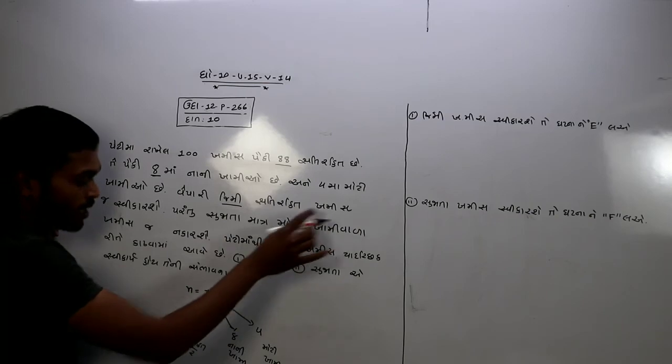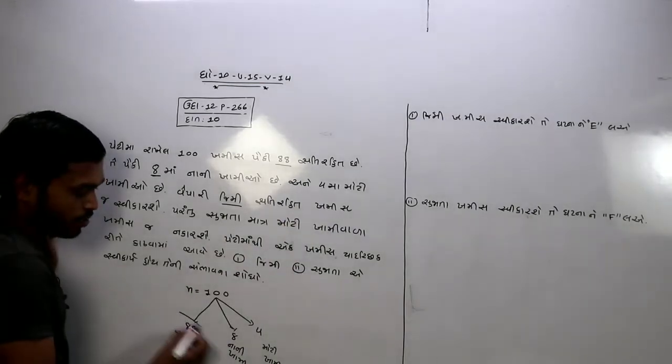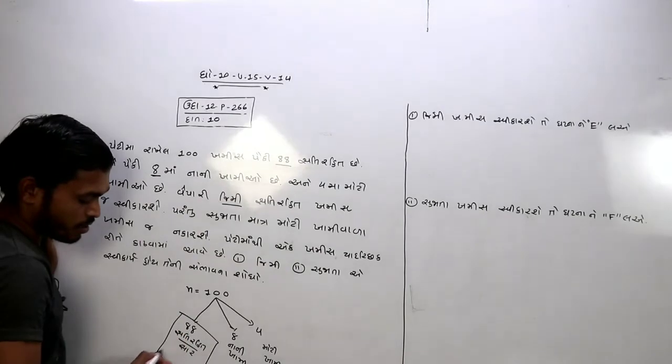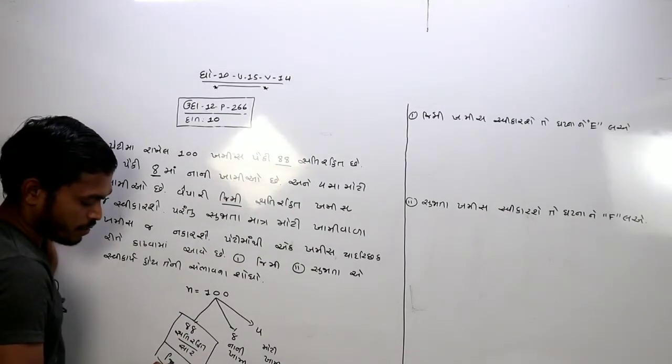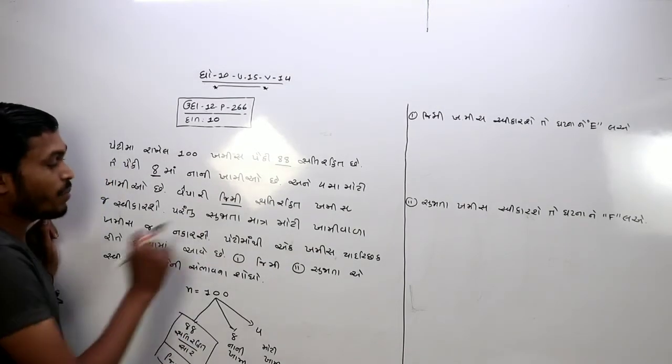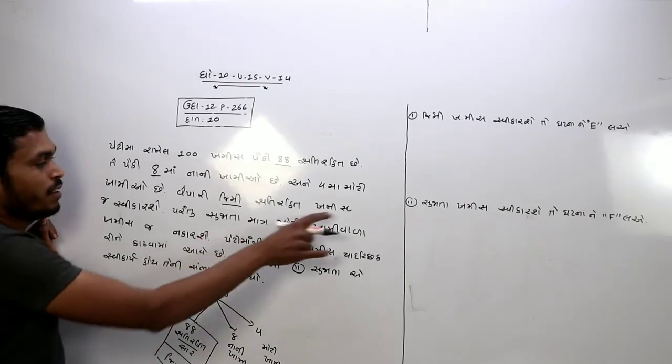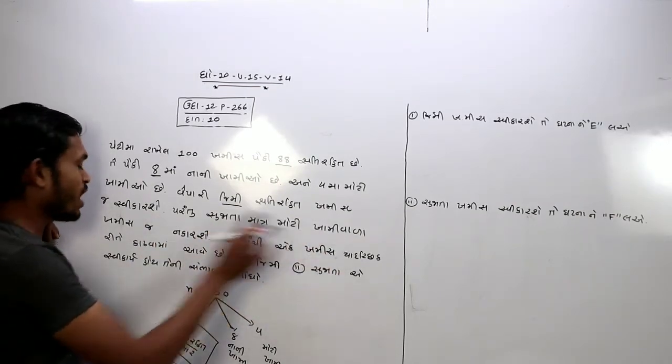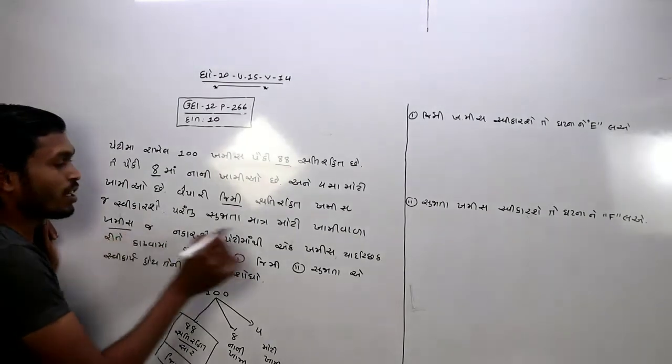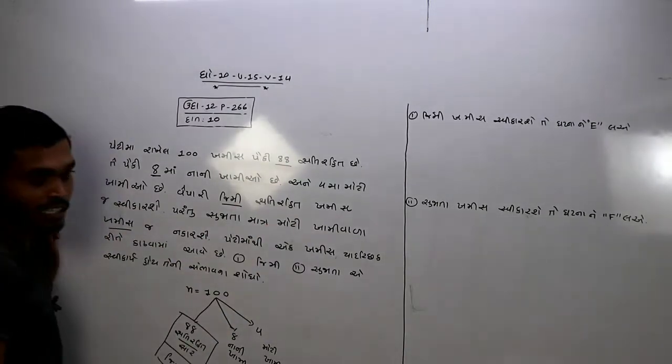સતી રહીજ ખામીજ સીખારે તેકે સારા સીખારી એસે તો ઇયાં ગાડી જીમી એસે આ બધા સટકોન લઈ ગઈ તેકે જીમી લઈગે તેયાર બાત સુખીજે સુજાતા પરંતુ સુજાતા માત્રા મોટી ખામી વાડા એકજ નથી મોટી ખામી વાડા એકજ નથી લેથી બાકી.